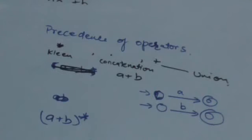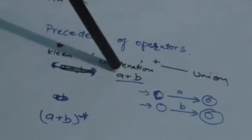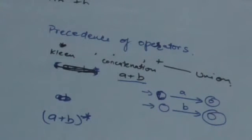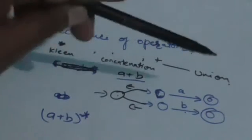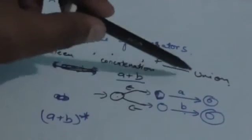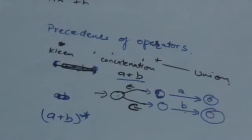Now we have to design a finite automaton corresponding to the regular expression a plus b. Here, this is a finite automaton corresponding to the regular expression a, and this is the finite automaton corresponding to the regular expression b. To design the automaton for a plus b, make a new initial state and from that initial state add empty transitions to the initial states of these two finite automata. The final states of this new automaton will be the final states of these two automata.